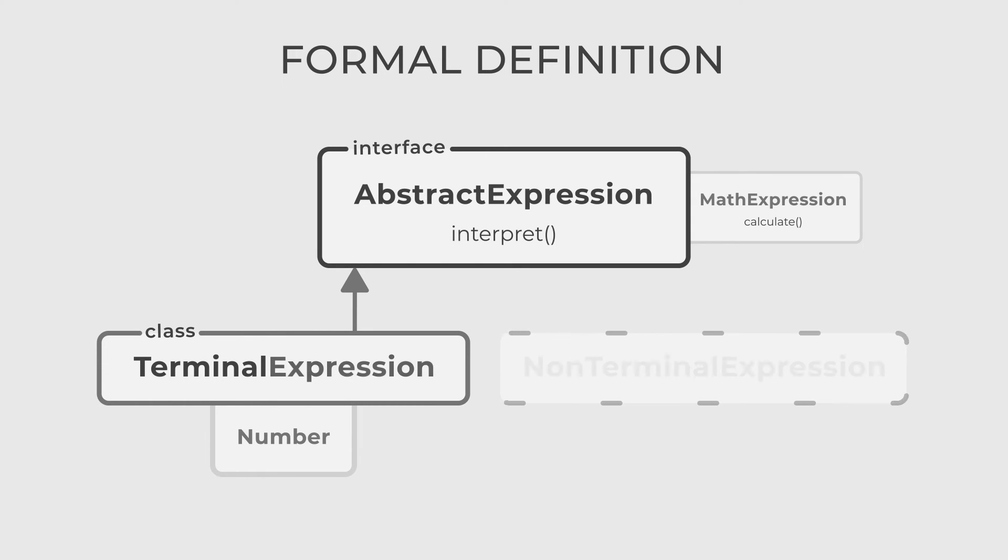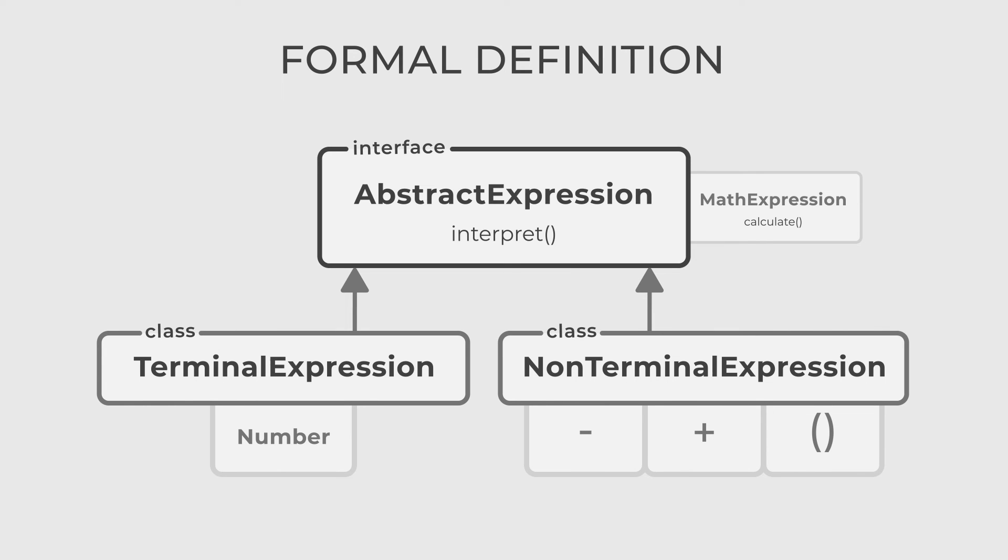The last one, non-terminal expression is also a subclass of abstract expression that implements the interpret method for non-terminal characters in the grammar. It usually combines and interprets multiple terminal and non-terminal expressions. In our example, non-terminal expressions are plus expression, minus expression, and brackets expression.